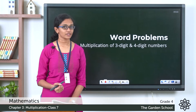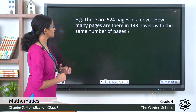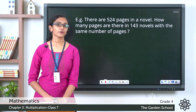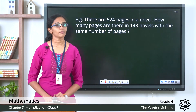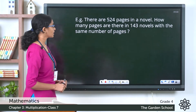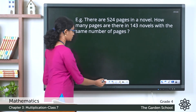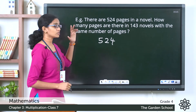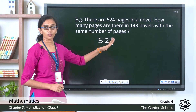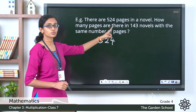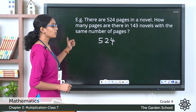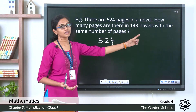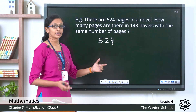We can go back to the addition word problems video as a reference. Let's see the first question: there are 524 pages in a novel. How many pages are there in 143 novels with the same number of pages? So you have a novel with 524 pages, and you have 143 novels — each with 524 pages. You are asked to find the total number of pages in all 143 novels.